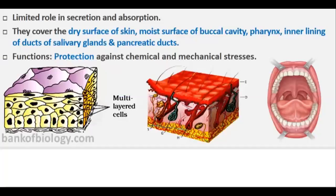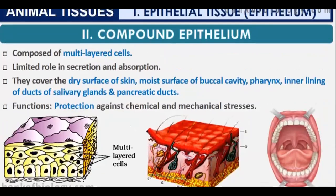Our epithelial tissue coverage is finished. Now we deal with compound epithelial tissue, which is composed of multiple layers of cells. Unlike simple epithelium with one layer, compound epithelium has 3, 5, 10, or 15 layers depending on the location.